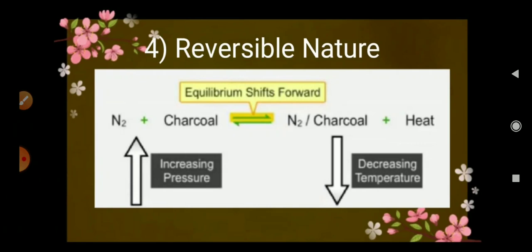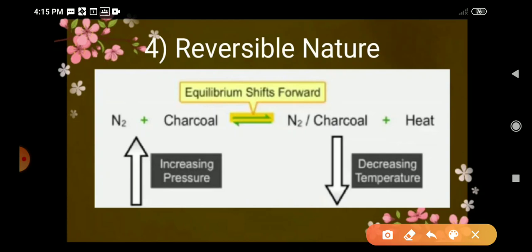Let us take an example. The nitrogen gas is adsorbed on the surface of charcoal, which is shown in the equation: N₂ + charcoal → N₂/charcoal, plus heat, because the process is exothermic. So in this adsorption process, the nitrogen gas is adsorbed on the surface of charcoal.